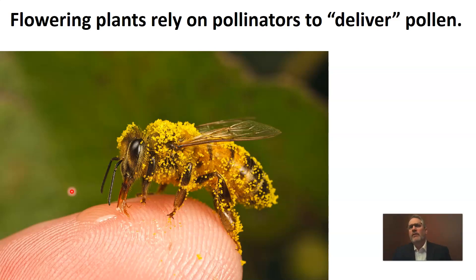Last time we looked at plants that use cones, which we call gymnosperms. Gymnosperms produce a lot of pollen that is very lightweight, and that pollen makes its way around the environment by the wind — it just blows everywhere and blankets everything. Remember that pollen is what allows plants that are rooted to the ground to reproduce.